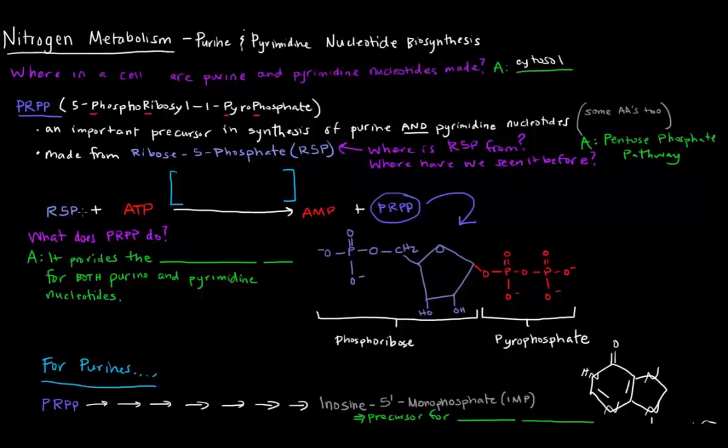Ribose 5-phosphate gets an ATP attached to it, and that yields an AMP and the PRPP. That reaction is catalyzed by ribose phosphate pyrophosphokinase. So it's using an ATP to add a pyrophosphate to the ribose phosphate. So ribose phosphate pyrophosphokinase, this is the ribose phosphate, and we're adding a pyrophosphate group to it from ATP, hence the kinase term there.